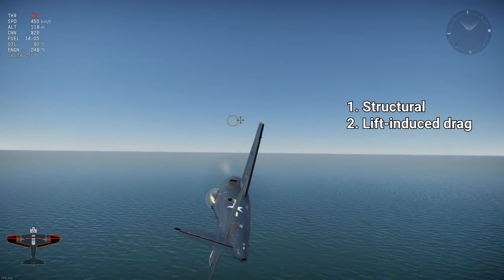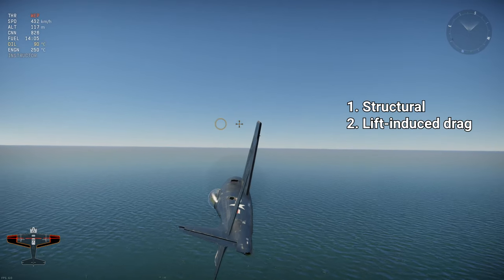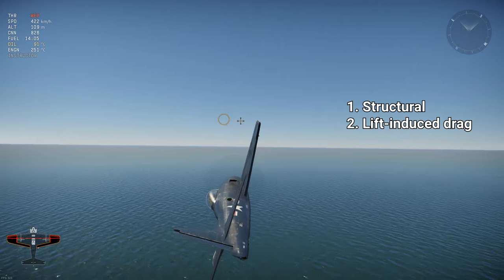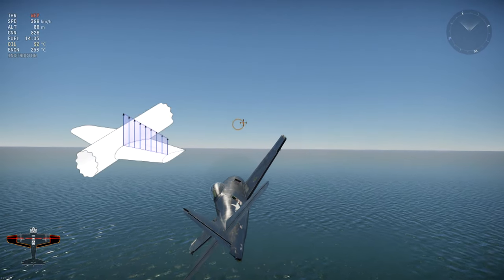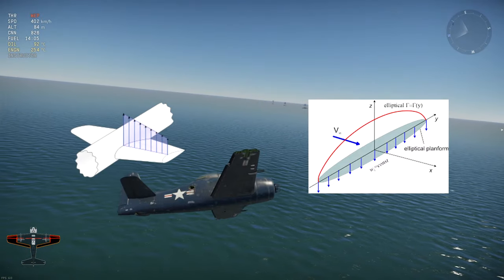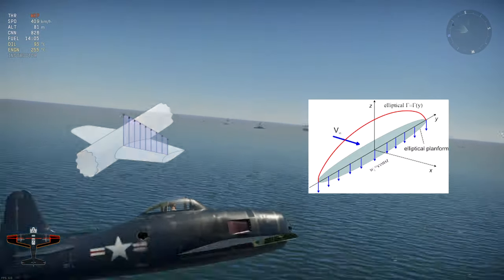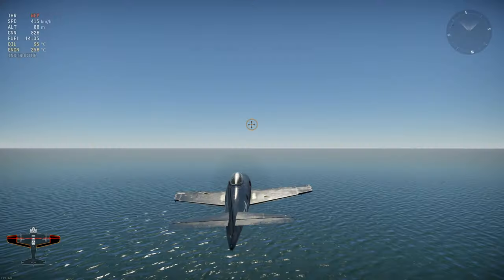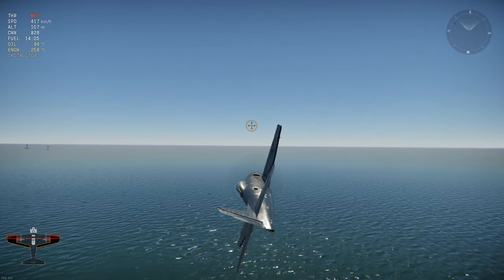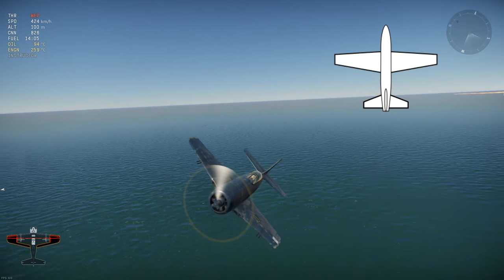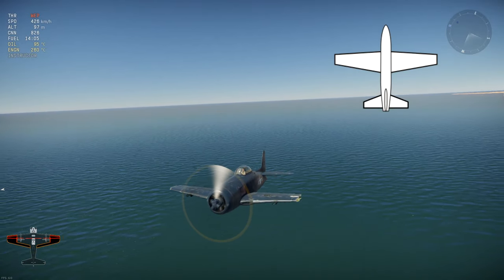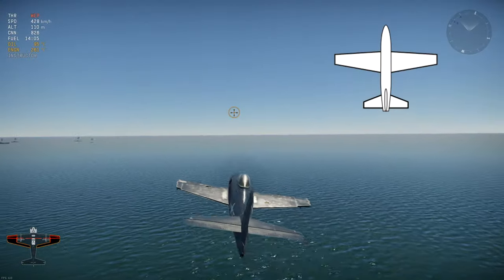Lift-induced drag is the drag generated whenever lift is created. For a given wing area and wingspan, induced drag is minimized when the lift distribution is elliptical. That's the point of having elliptically shaped wings like the Spitfire. Since elliptical wings are more time-consuming to manufacture and they come with their own set of issues, most aircraft have tapered wings to mimic the elliptical lift distribution as best as they can to reduce lift-induced drag.